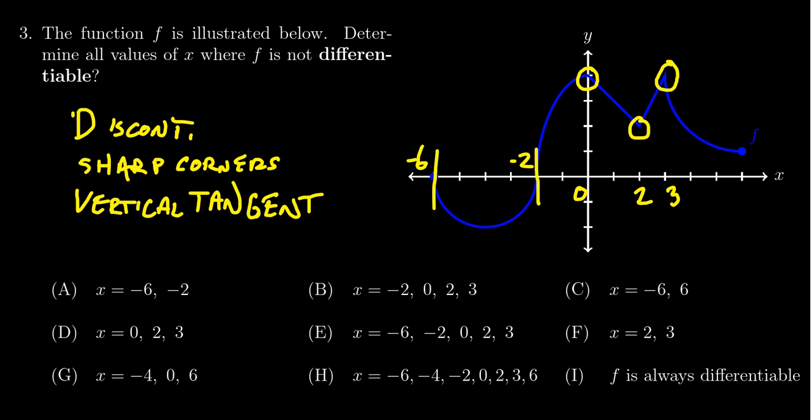This question about determining whether the graph is differentiable at certain points or continuous at different points is related, because if the function's not continuous at a point, then it won't be differentiable. But if you have a sharp corner like here, it is continuous at this point but not differentiable.